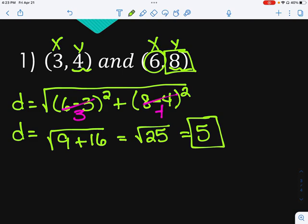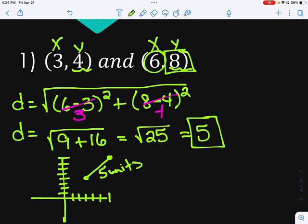And there is not a decimal because 25 was a perfect square. So if I plotted these two points, if I came over here and I just drew a simple graph here real quick, and I plot the points (3,4) and (6,8), that segment would be 5 units long. So that's what we're finding here.